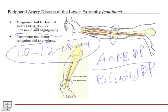Treatment: start with risk factor reduction — quit smoking, control diabetes, lose weight, lower cholesterol, lower blood pressure. If those don't work or the disease is severe, you can do angioplasty and place stents in arteries of the lower extremity. Femoral artery stents are a very common procedure.